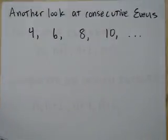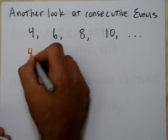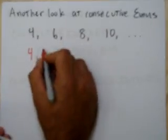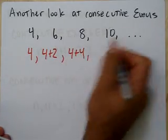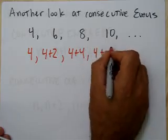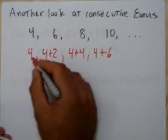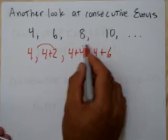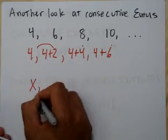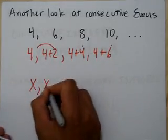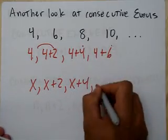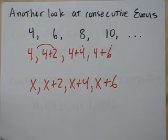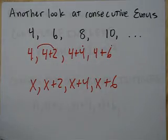The even numbers, same kind of thing. I can rewrite this. 4, 6, 8, 10 is 4. I can write 6 as 4 plus 2, 8 as 4 plus 4, and 10 as 4 plus 6. So again, I'm jumping up 2, then 2 more, and then 2 more. So if I didn't know the first one, I could write it x, the next one x plus 2, the next one x plus 4, and then finally x plus 6. If I kept going, plus 8, plus whatever. Kind of cool.